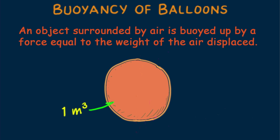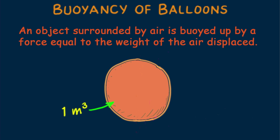We know that a cubic meter of air at ordinary atmospheric pressure and room temperature has a mass of about 1.2 kilograms, so its weight is about 12 newtons. Therefore any one cubic meter object in air is buoyed up with a force of 12 newtons.